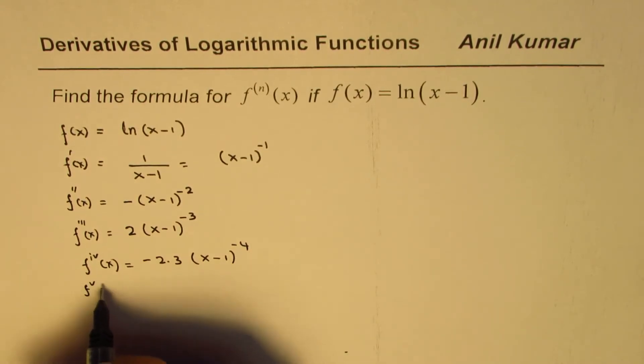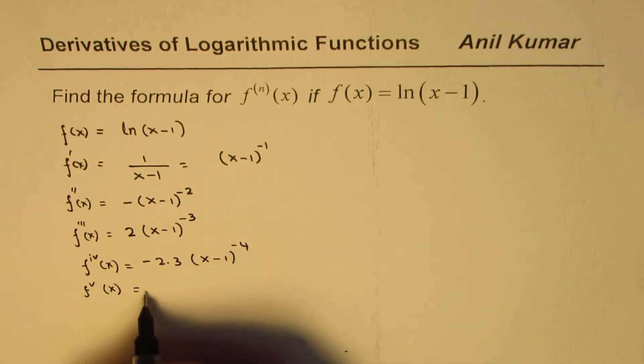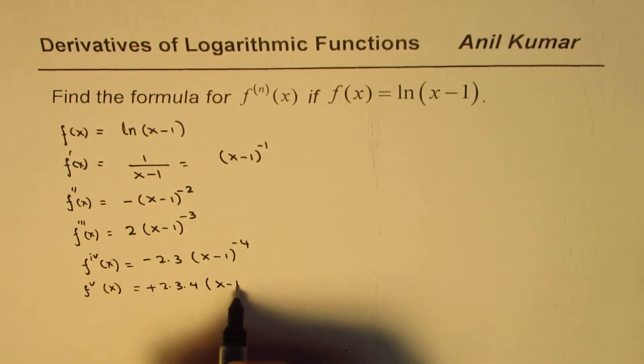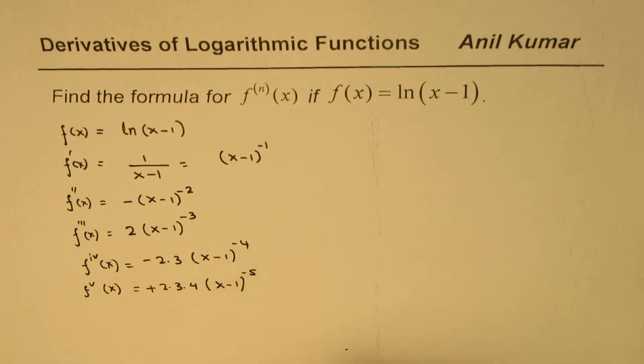So likewise, if we continue, the fifth derivative will be, it becomes positive now, 2 times 3 times 4, (x-1) to the power of minus 5.